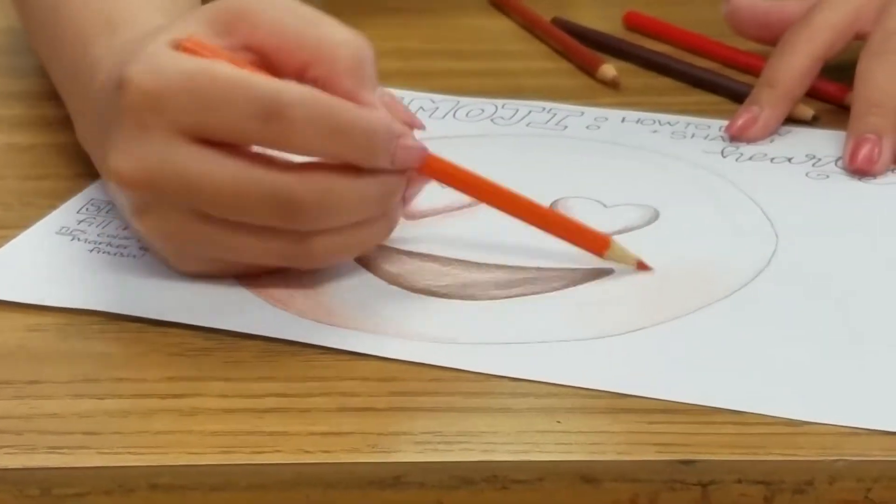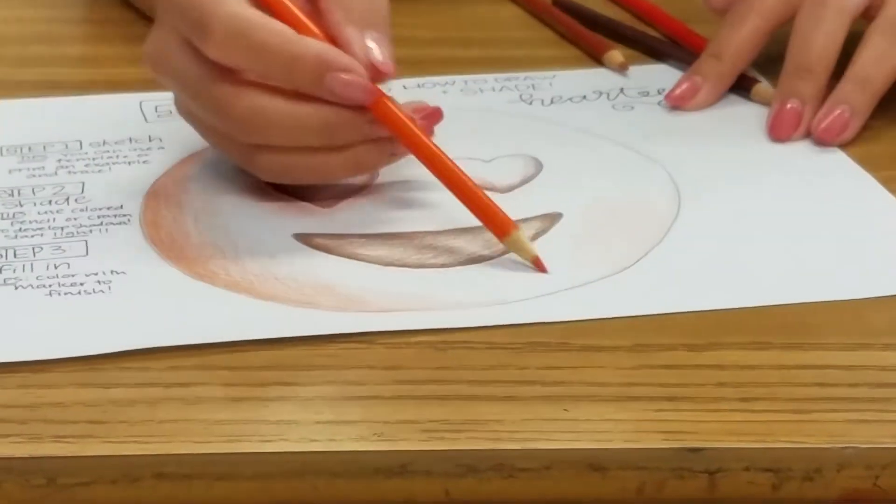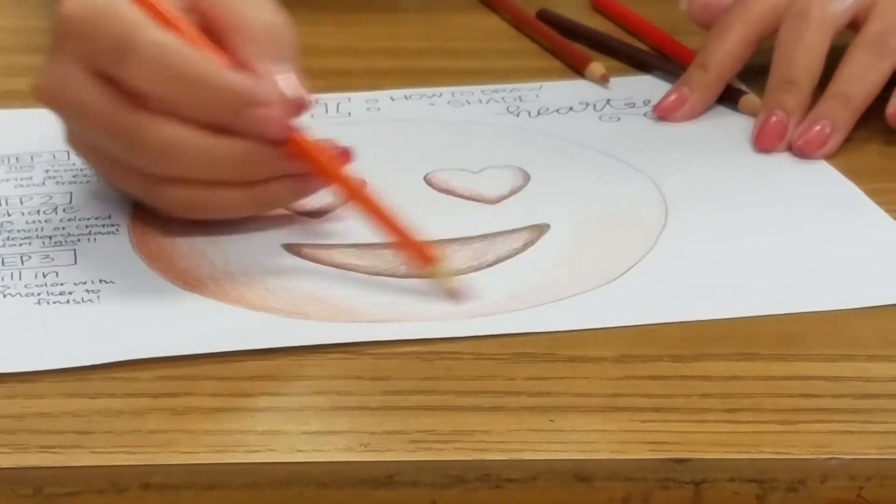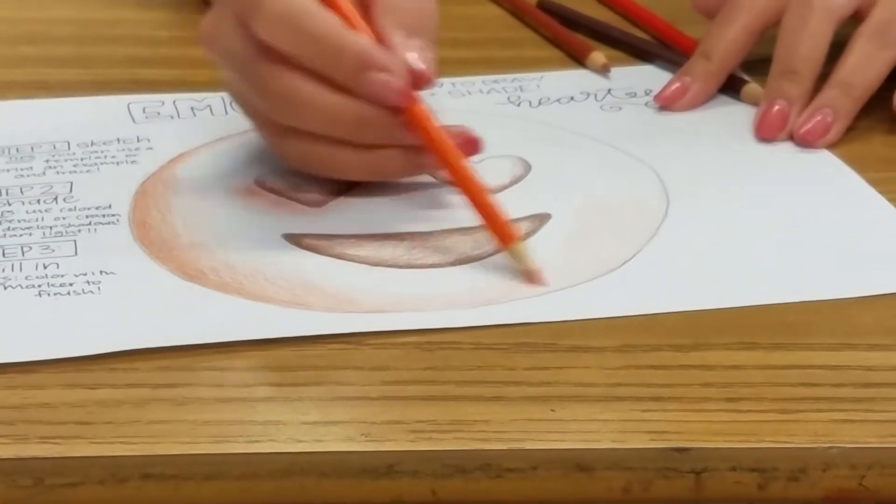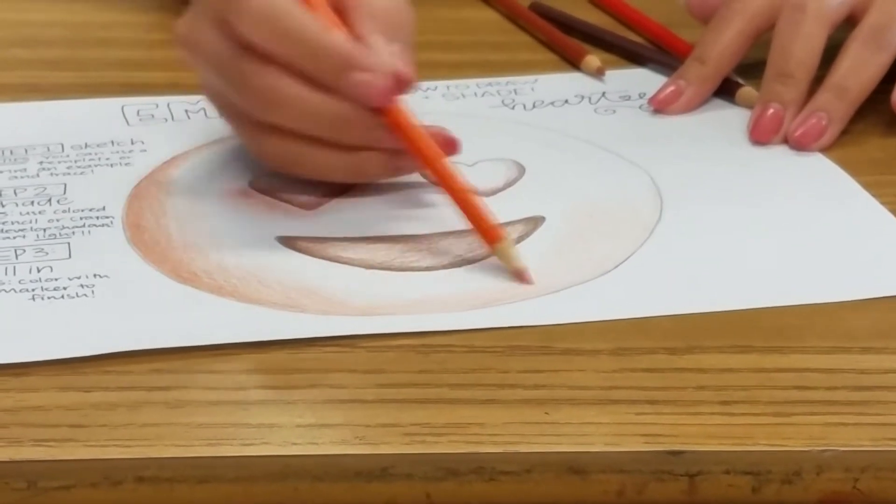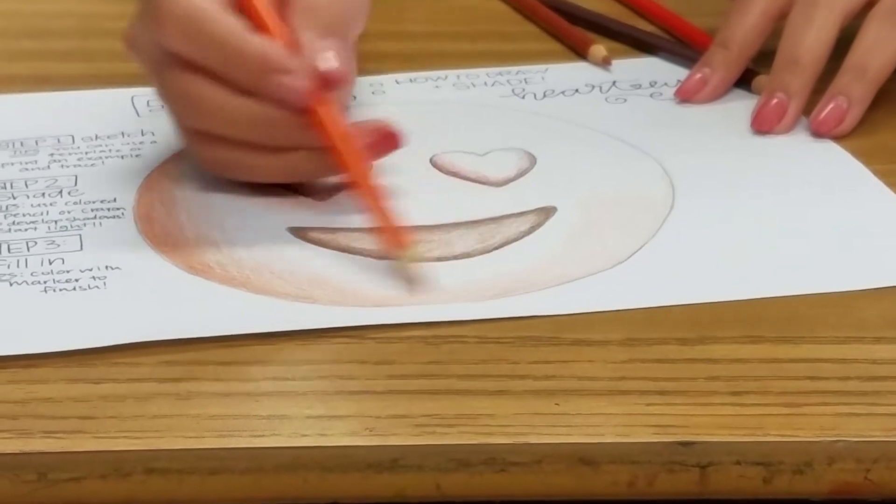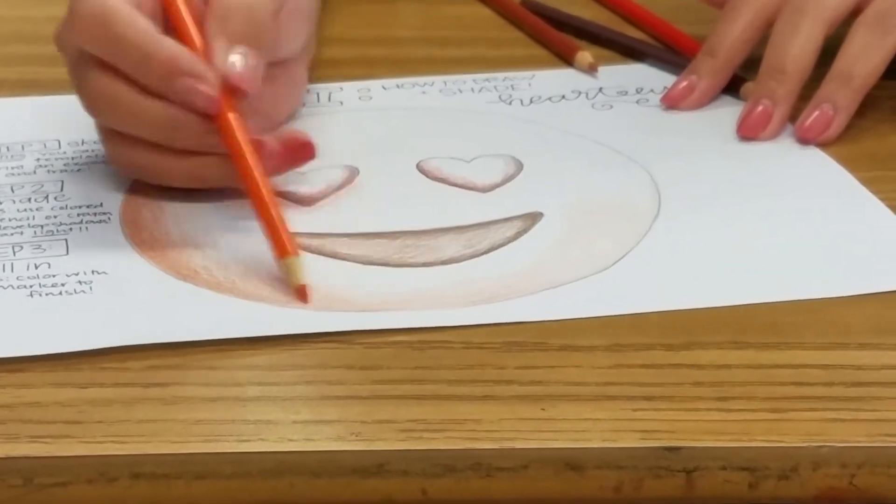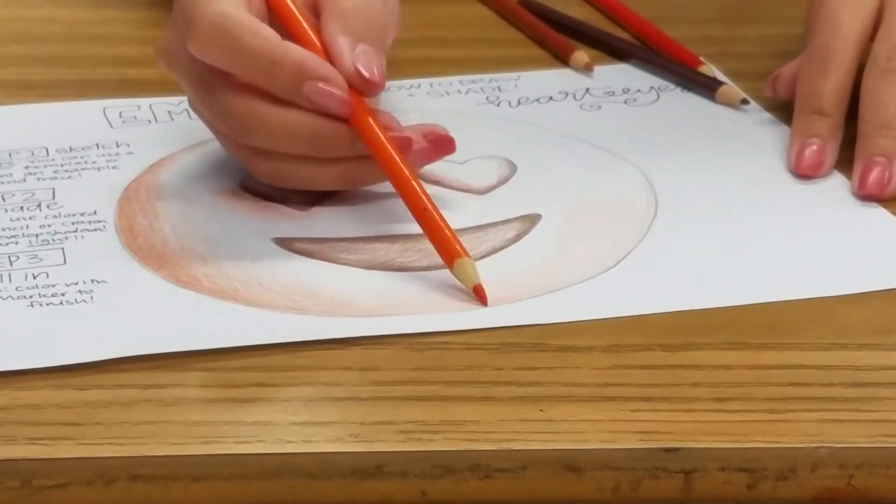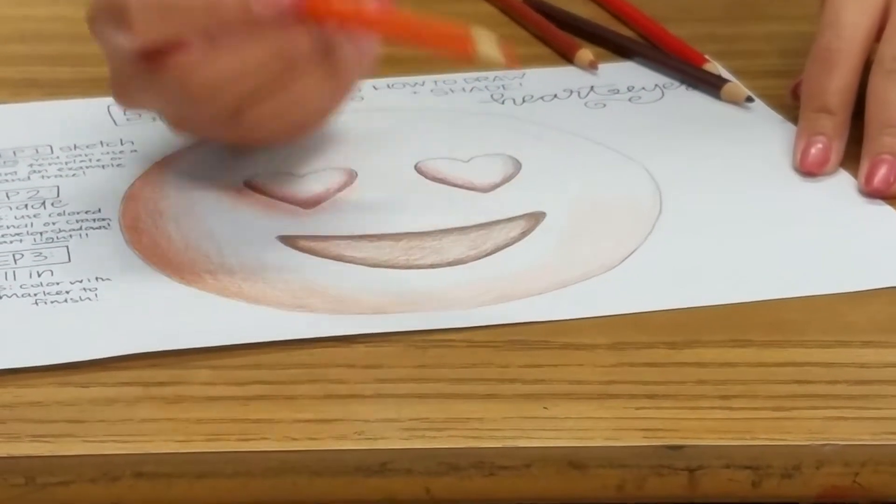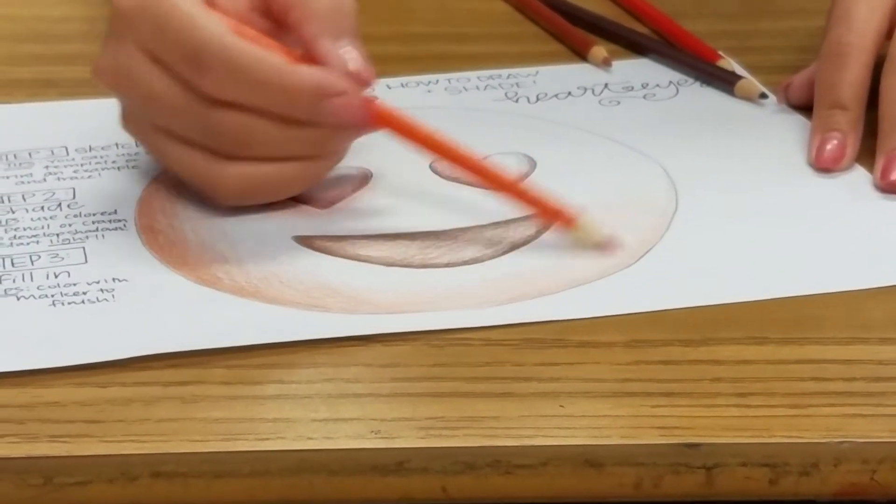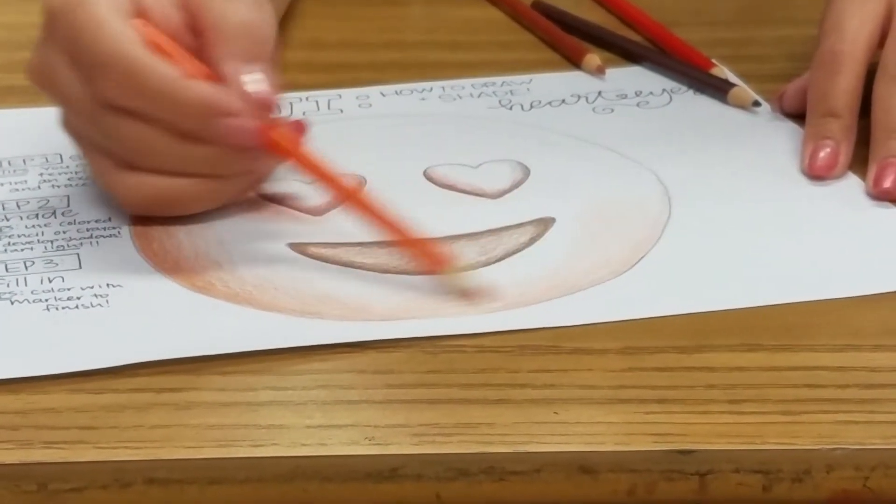I know that when I watch y'all sometimes coloring things in, you can kind of see all your strokes, your pencil strokes. That's because you're hitting it a little too hard and you're using that tip of the pencil. Instead, if you hold your pencil kind of at the end of the pencil and move it really lightly...